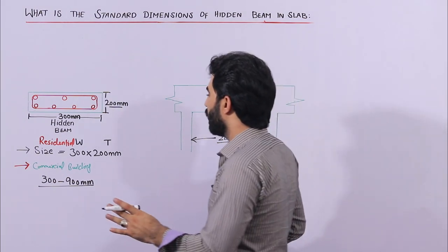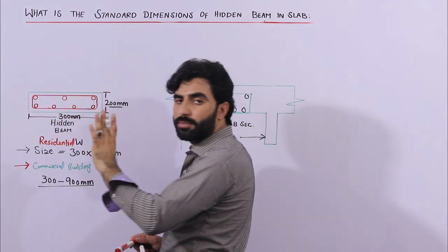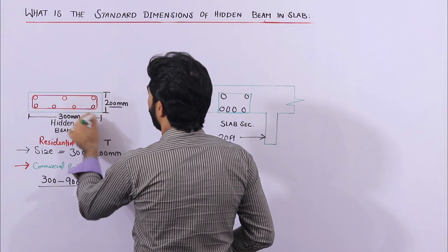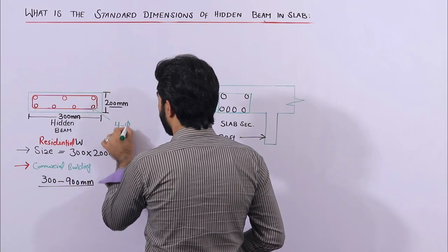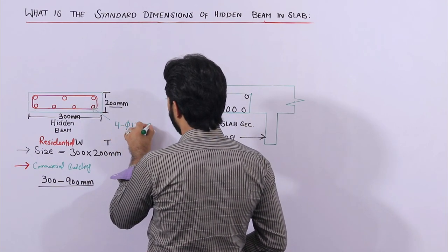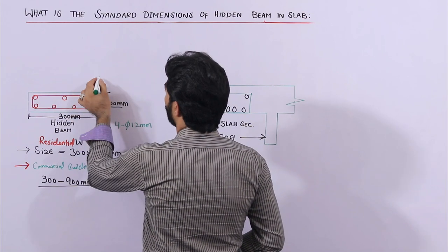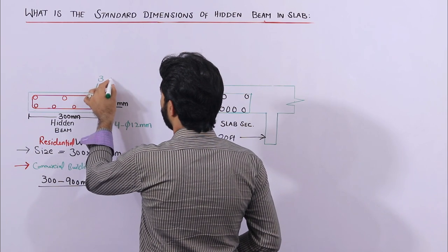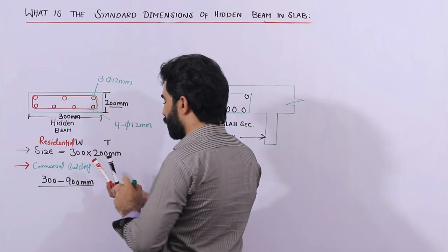For steel reinforcement, use a minimum of four steel rods at the bottom for the 300 by 200 mm dimension. The diameter should not be less than 12 mm for a normal residential building. For the compression zone at the top, use a minimum of three bars — do not provide only two — with a diameter of up to 12 mm.